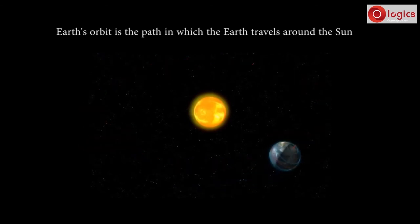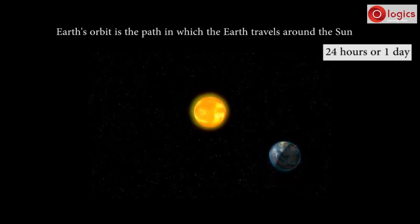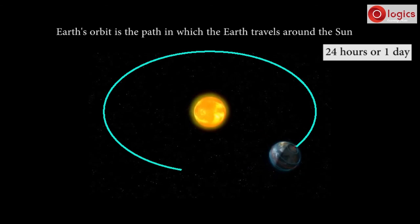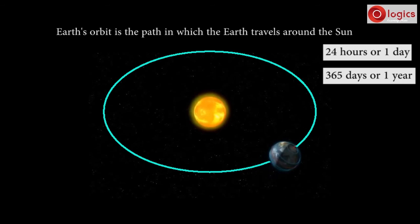To rotate on its axis it takes 24 hours, that is one day. To travel around the Sun it takes 365 days, that is one year.